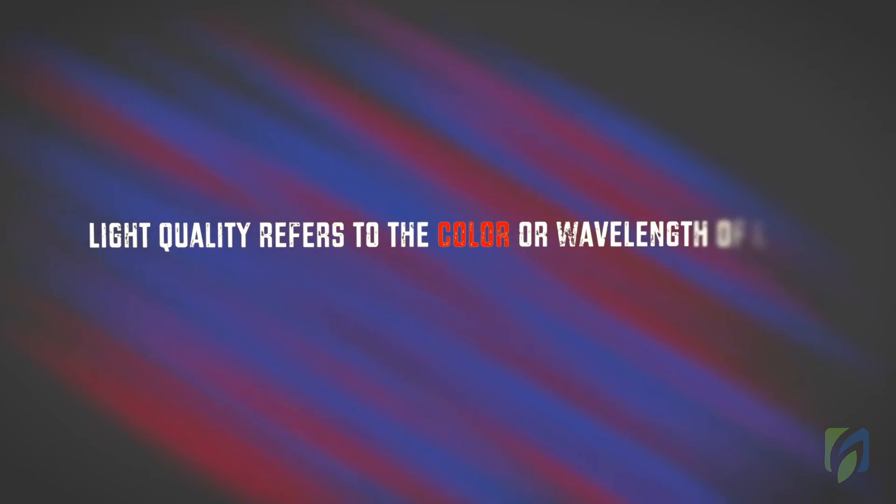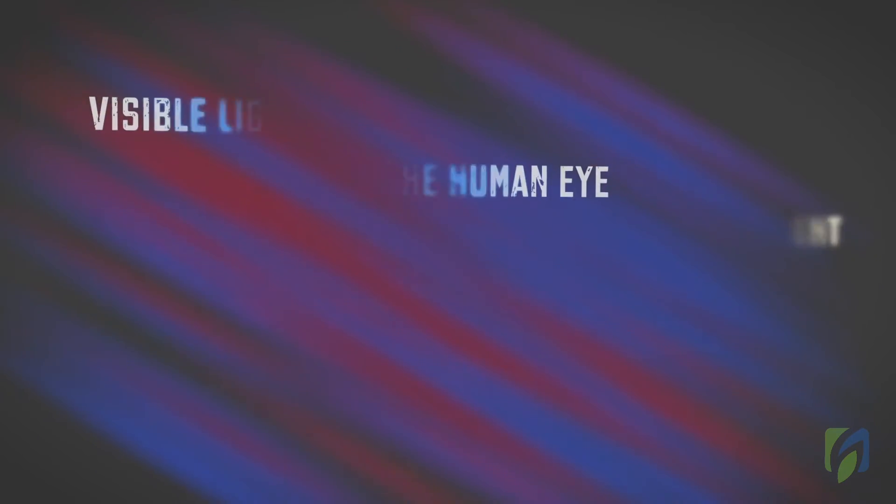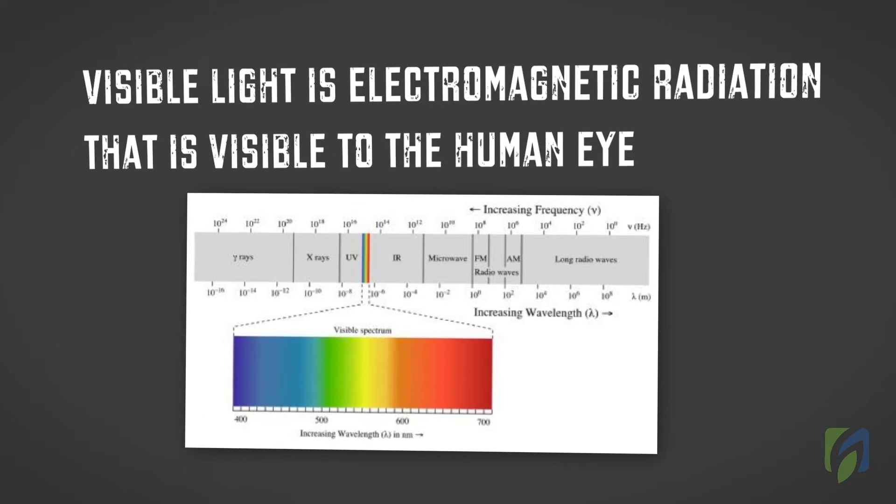What is light quality? Light quality refers to the color or wavelength of light. Visible light is electromagnetic radiation that is visible to the human eye.